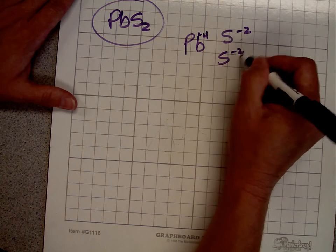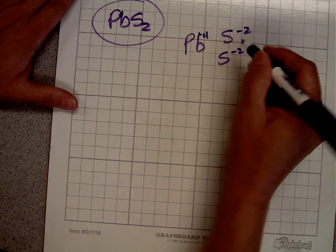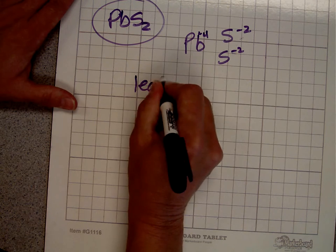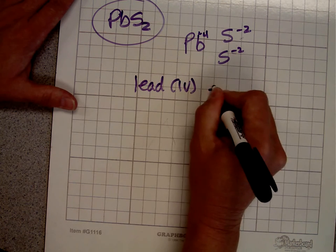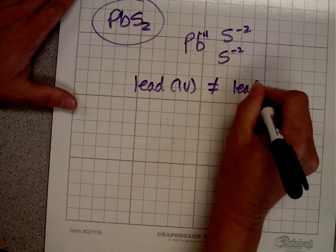So lead gives up four. Sulfur, each of the sulfurs take two. That's why we write it as lead four and not lead two.